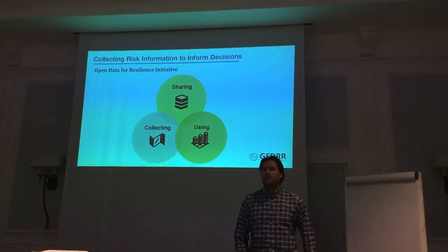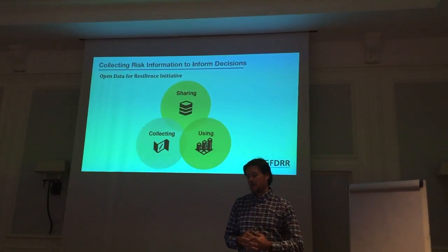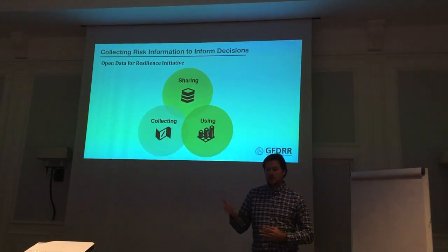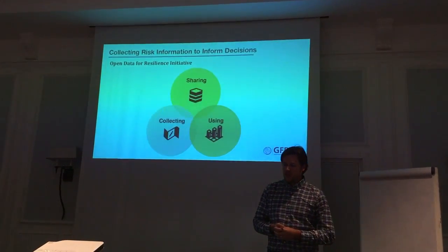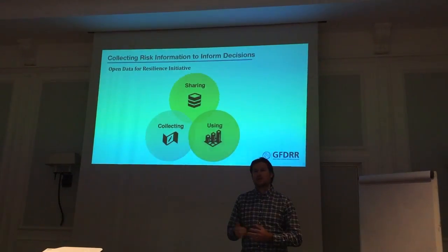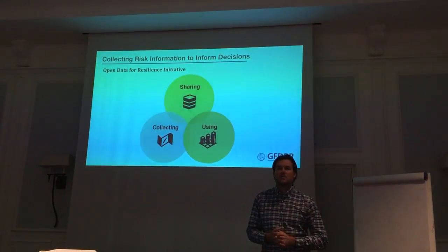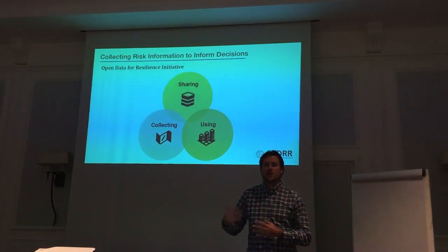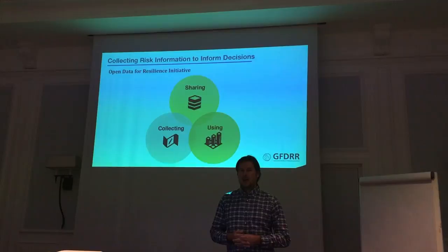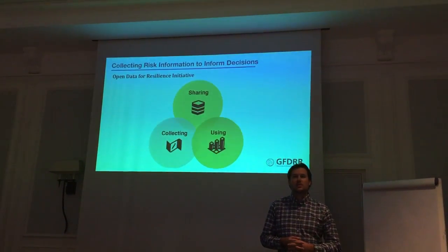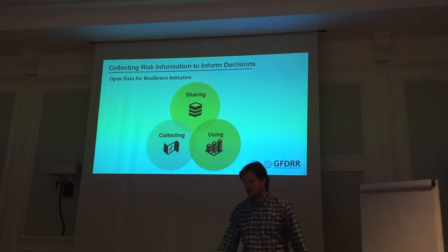Through OpenDRI we have three main pillars: sharing information, collecting information, and using the information. When we start a project with OpenDRI, we use tools like OpenStreetMap to collect information and help local communities collect data. We use tools like GeoNode for sharing information, and other open source tools like QGIS or InaSAFE to analyze and understand the information being collected and shared.